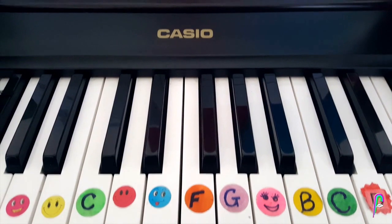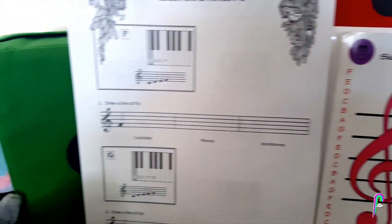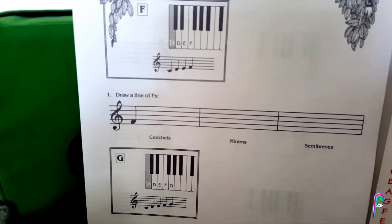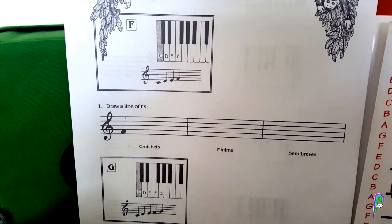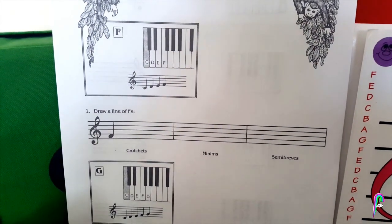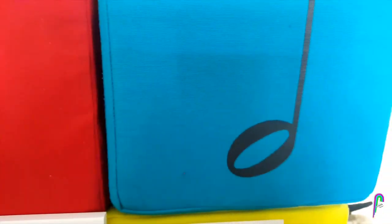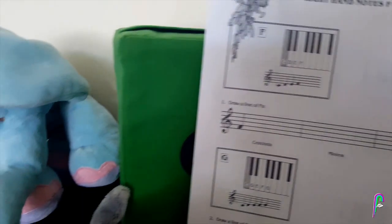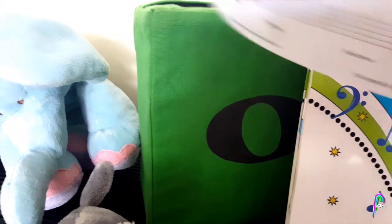Now our first question says let's draw a line of F's and the F's are crotchets, minims and semibreves. Now if you don't remember what they are let me show you. Here we have our crotchet, here we have our minim and if we slide on down behind our theory paper we have got a semibreve hiding back there.